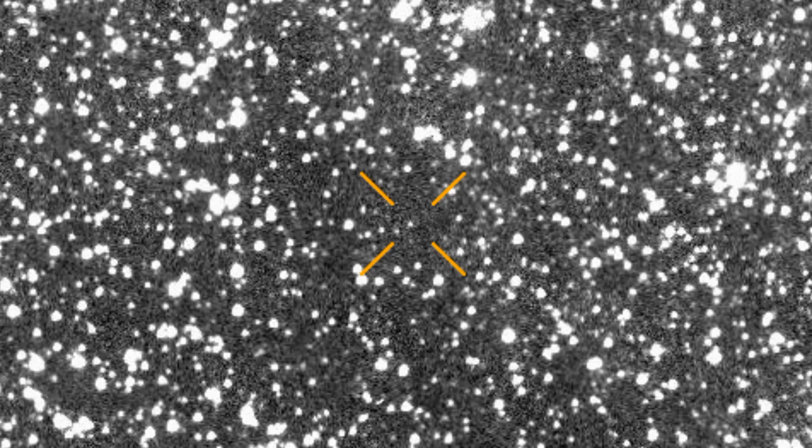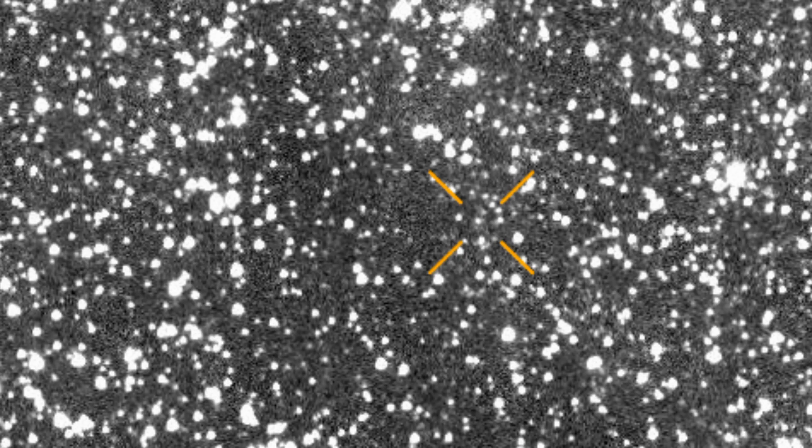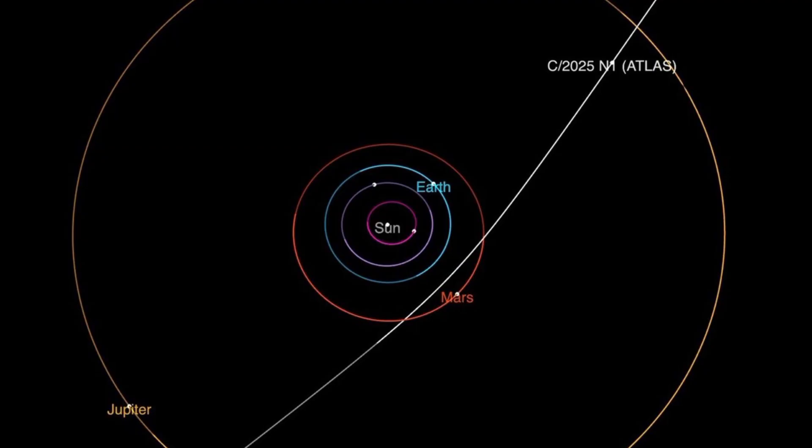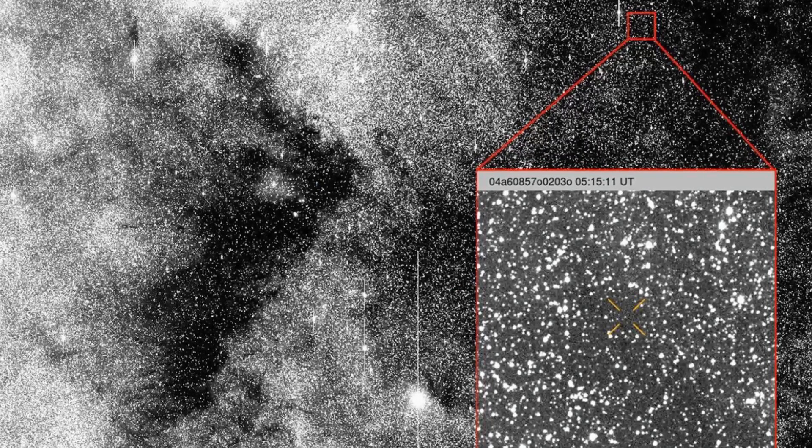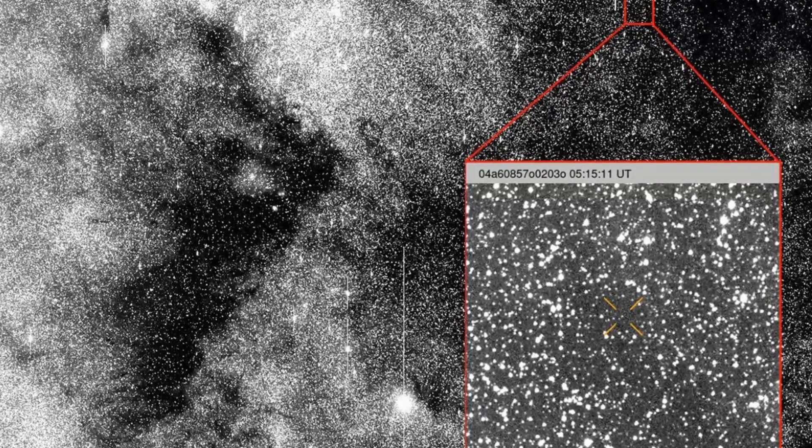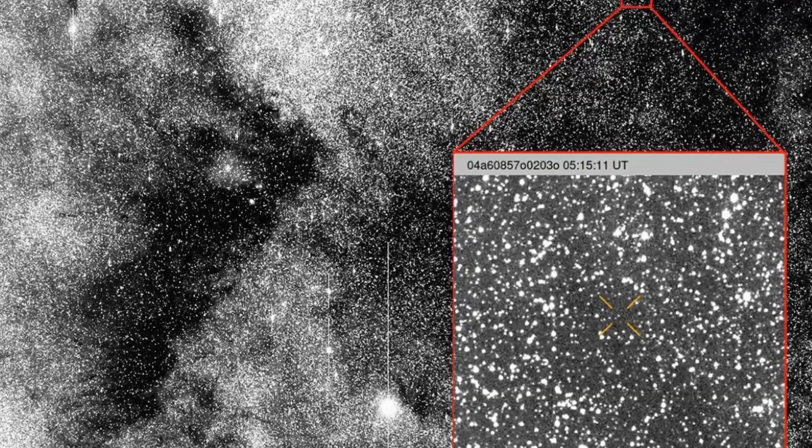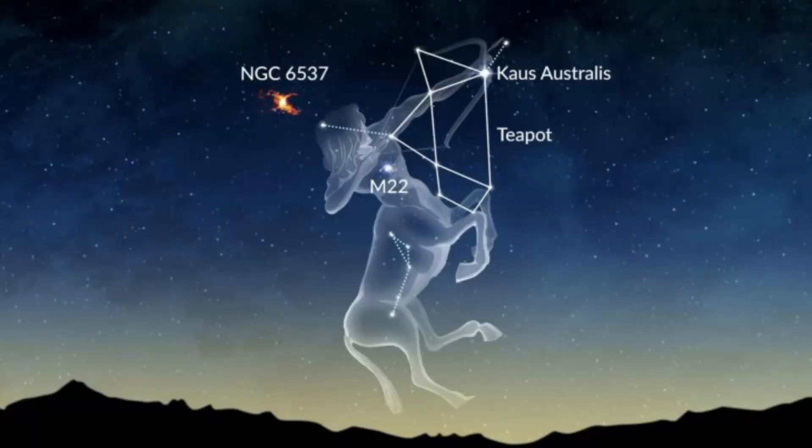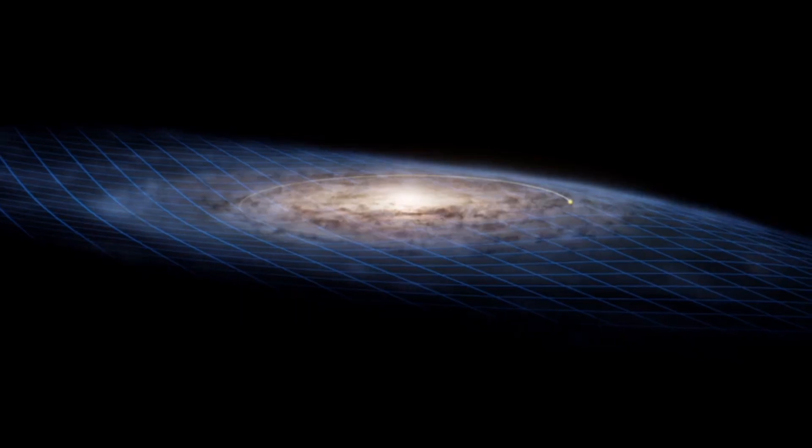3i-Atlas is not bound to the Sun. It follows a hyperbolic orbit, meaning it will pass through our system once and never return. With an eccentricity of around 6.1, it's the most eccentric interstellar object ever observed. It's arriving from the direction of Sagittarius, pointing toward the galactic disk.